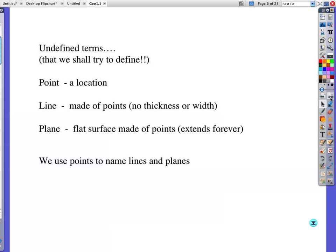A point is a location. A line is made up of points. It technically has no thickness or width. We can't draw it that way, so we will have thickness and we will have width to our line. And a plane is a flat surface made of points that extends forever.